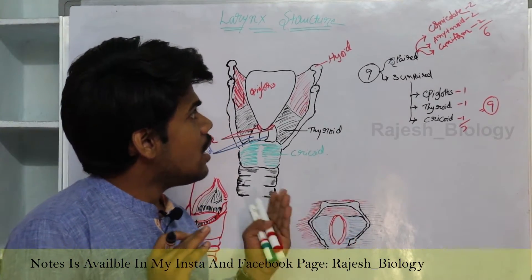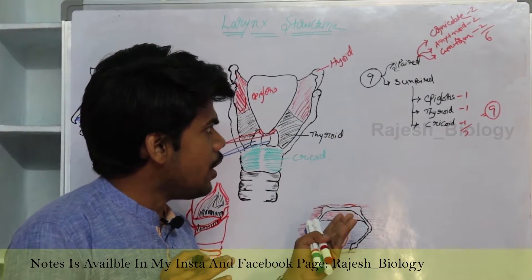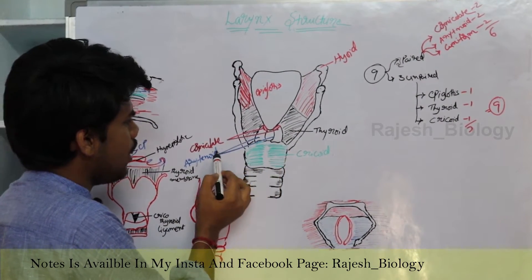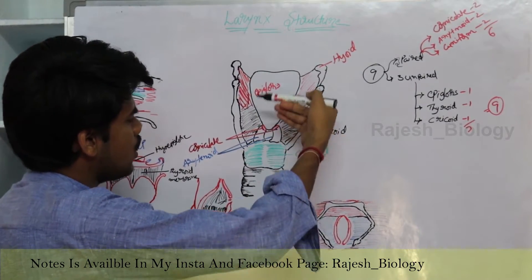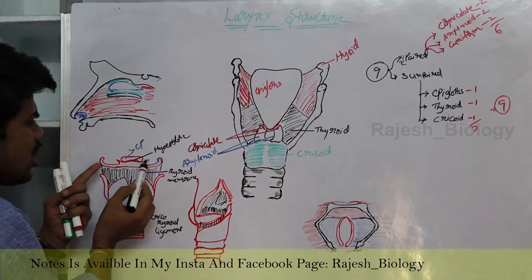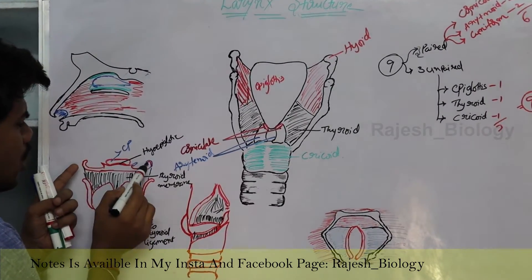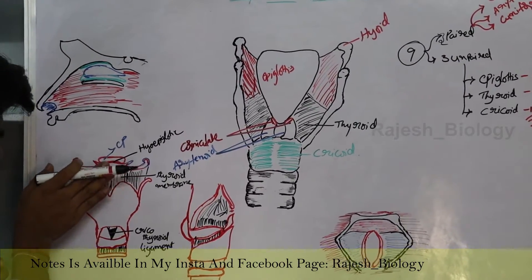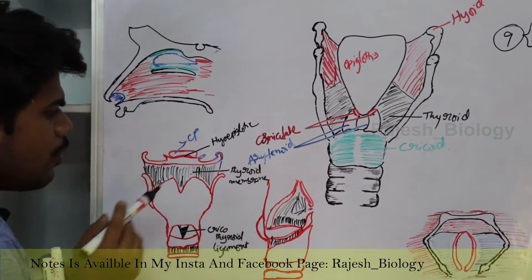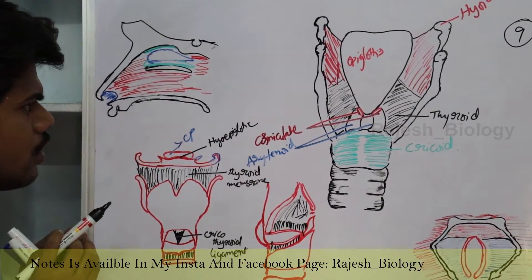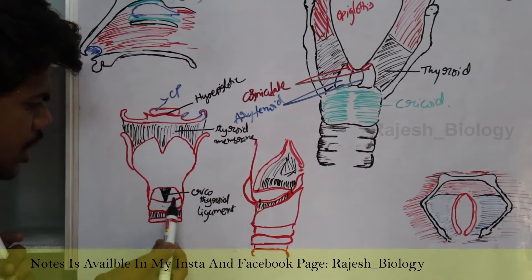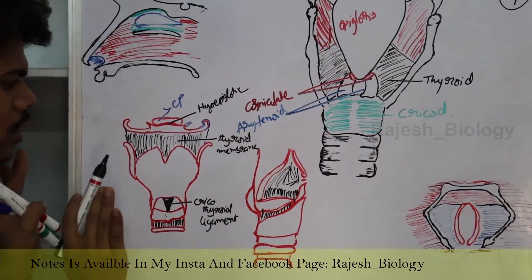So this is the basic structure of the larynx. The larynx is supported by nine cartilages — three paired and three unpaired. Unpaired cartilages are epiglottis, thyroid, and cricoid; paired cartilages are corniculate, arytenoid, and cuneiform, which is present behind the corniculate. The hyoid bone has minor and major branches. There is a hyoepiglottic membrane between the epiglottis and the bone, a thyroid membrane attaching to the thyroid, and a cricothyroid ligament between the cricoid and thyroid.